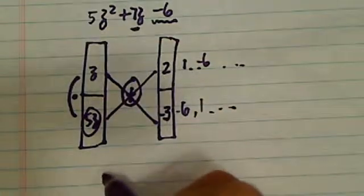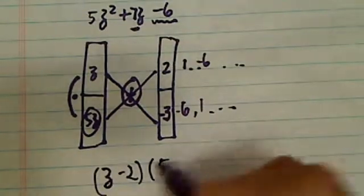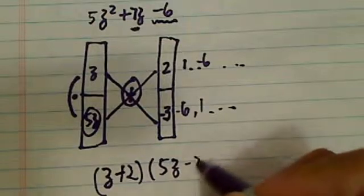So what I have is z plus 2 times 5z minus 3.